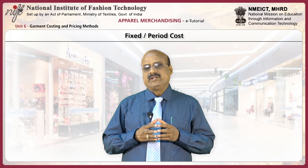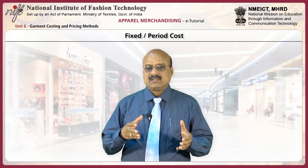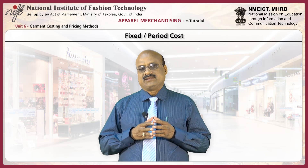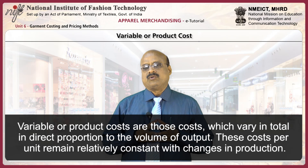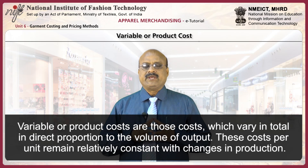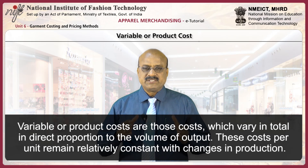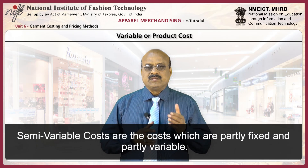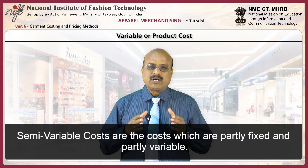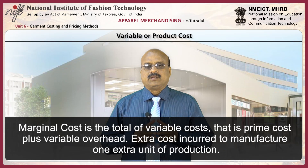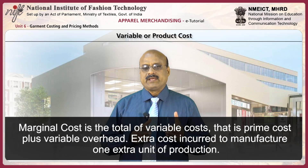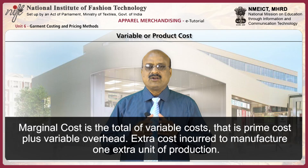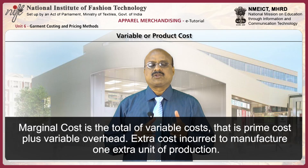Fixed cost per unit decreases as production increases and increases as production declines. Variable or product costs are those costs which vary in total in direct proportion to the volume of output. These costs per unit remain relatively constant with changes in production. Semi-variable costs are those costs which are partly fixed and partly variable. Marginal cost is the total of variable cost — that is prime cost plus variable overhead — extra cost incurred to manufacture one extra unit of production.